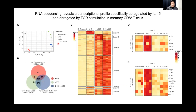Using the same stimulation condition, we performed bulk RNA sequencing, and we were able to find individual and overlapping differentially expressed genes that are upregulated by IL-15, TCR, and combined stimulation. We were able to isolate a set of genes as cluster 1 that is specifically upregulated by IL-15, but unchanged or downregulated by TCR or combined stimulation. This cluster 1 was enriched with genes associated with NKG2D-mediated cytotoxicity and also genes for interferon response.